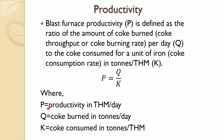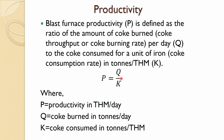Here, P is given in tons of hot metal per day, Q equals the coke burned in tons per day, and K is the coke consumed in tons per ton of hot metal. There are various ways this productivity can be defined; this is one commonly used way, but there are many others.